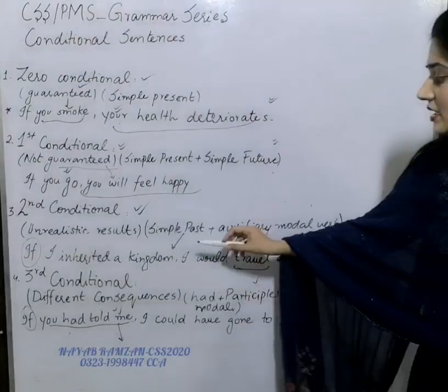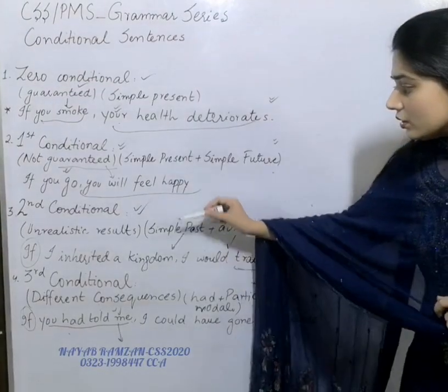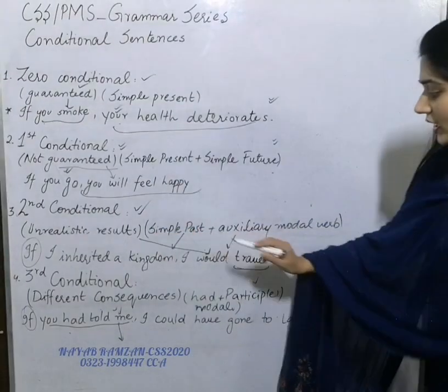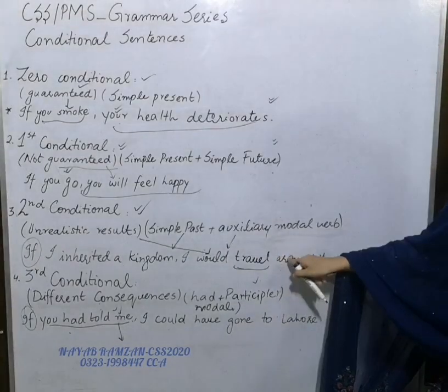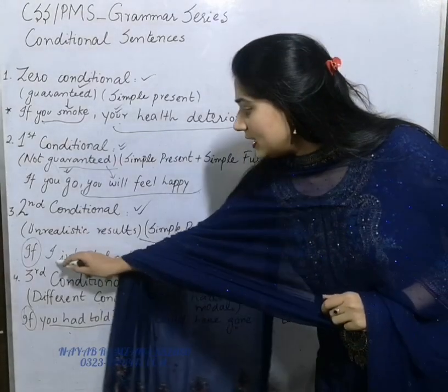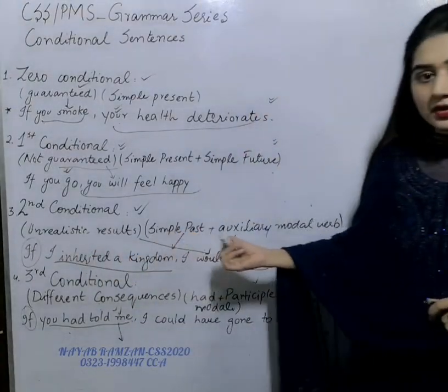The results of these conditions are not realistic, and the probability of them happening is very low or zero. That is why we use the third conditional structure for such past situations with no possibility of occurring.